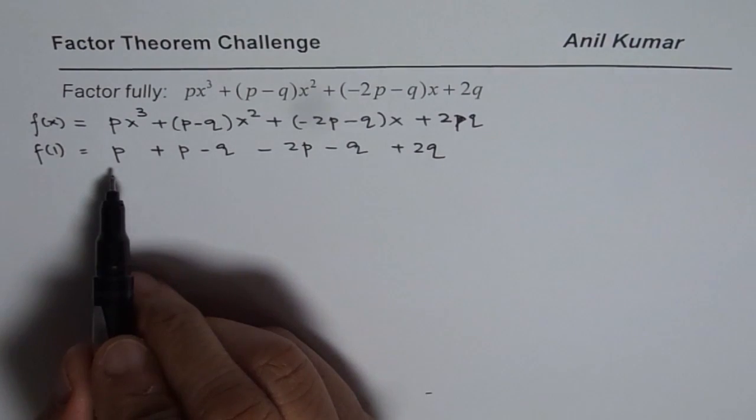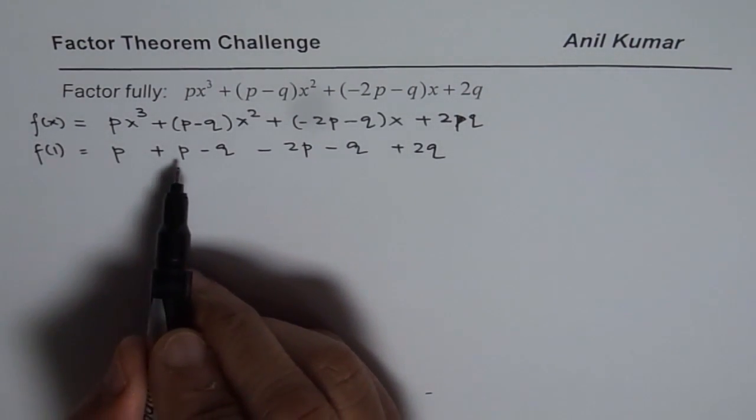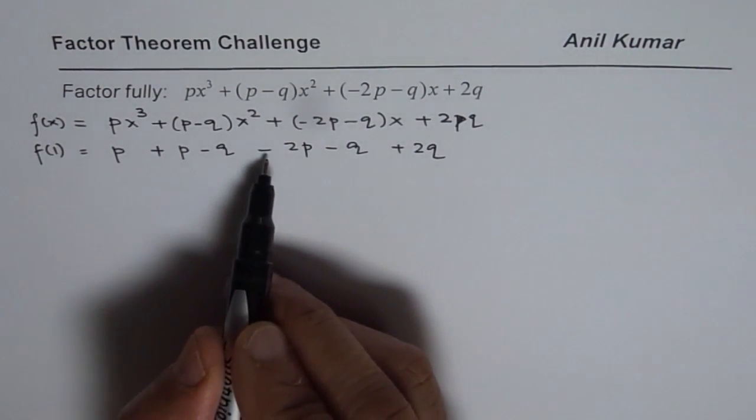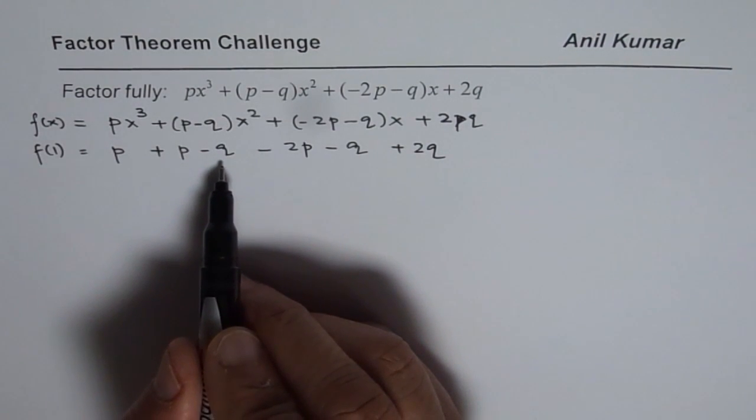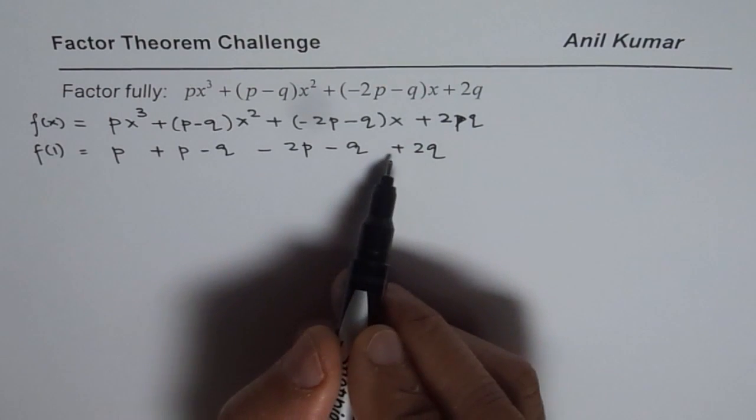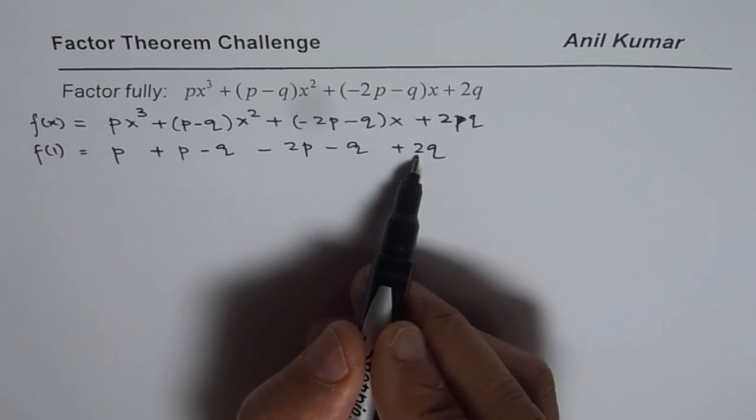and here we get +2q. Now, adding these terms which are p's, 1p, 2p, -2p, we get 0. As far as q is concerned, -q, -q, and +2q, we do get 0.